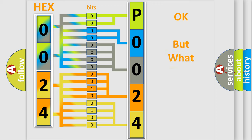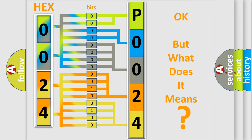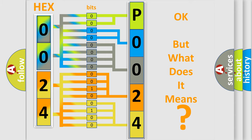The number itself does not make sense to us if we cannot assign information about what it actually expresses. So, what does the diagnostic trouble code P0024 interpret specifically for Pontiac car manufacturers?